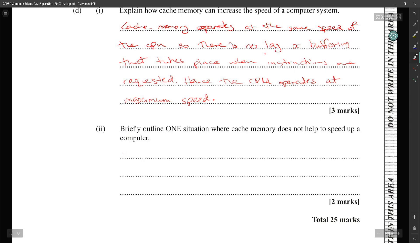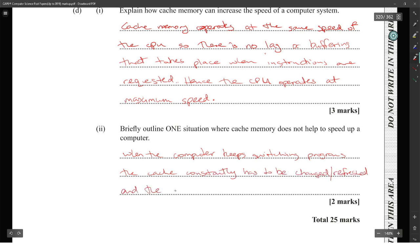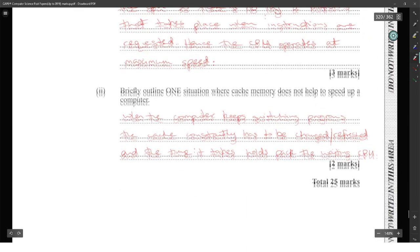One situation where cache memory does not help speed up a computer: when the computer keeps switching programs constantly. The contents of the cache must be flushed and replaced with data for the new program over and over, which does not benefit the CPU. That concludes module one.